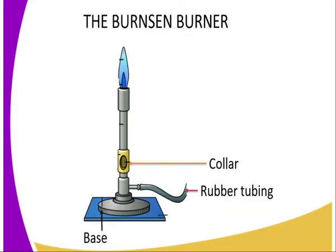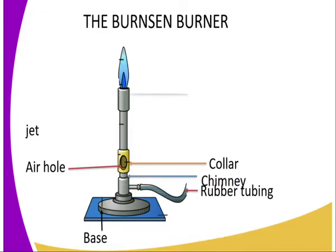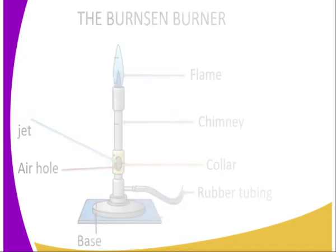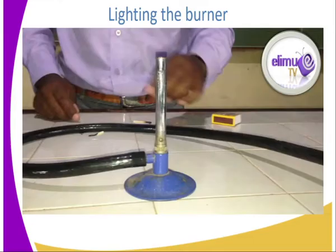We also have the rubber tubing, which connects the laboratory gas source to the Bunsen burner. We have the collar, which regulates the amount of air getting into the chimney. Within the collar we have an air hole — the air hole simply allows air into the chimney. We have the jet, which allows laboratory gas into the chimney. The jet is just above or in the same position as the air hole, to allow the mixture of air and gas to burn and produce a flame.